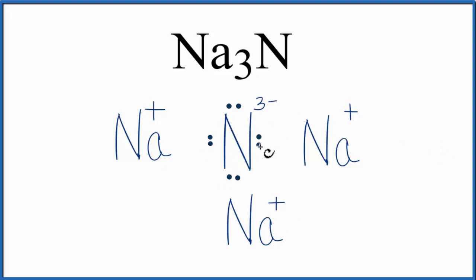We should put brackets around the nitrogen here to show that it's an ion. And you'll often see brackets around the positive ion as well. We need these brackets to show that the electrons aren't shared between the sodium and the nitrogen. The sodium transferred its valence electron to the nitrogen, and now it belongs with the nitrogen.